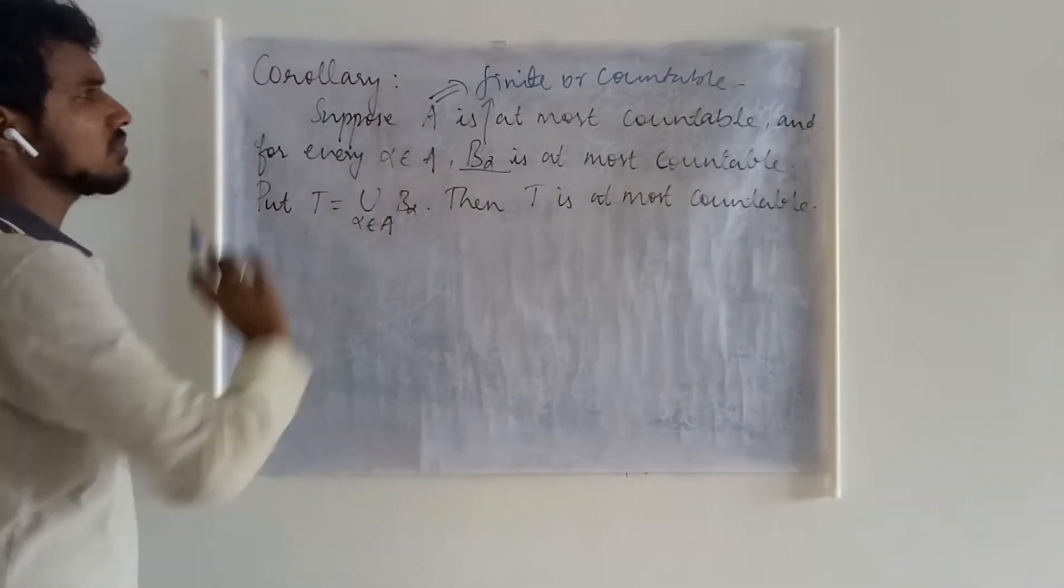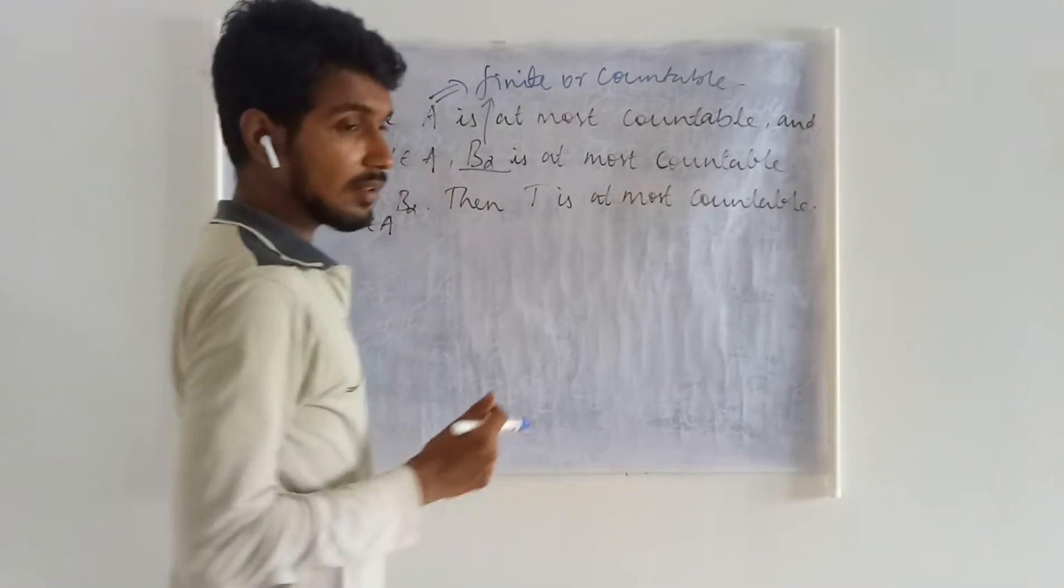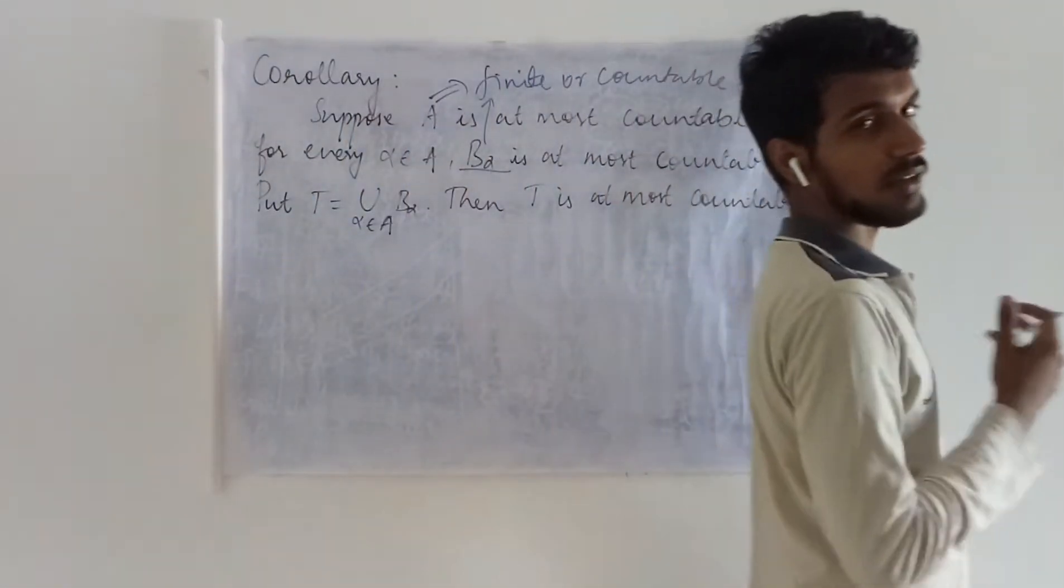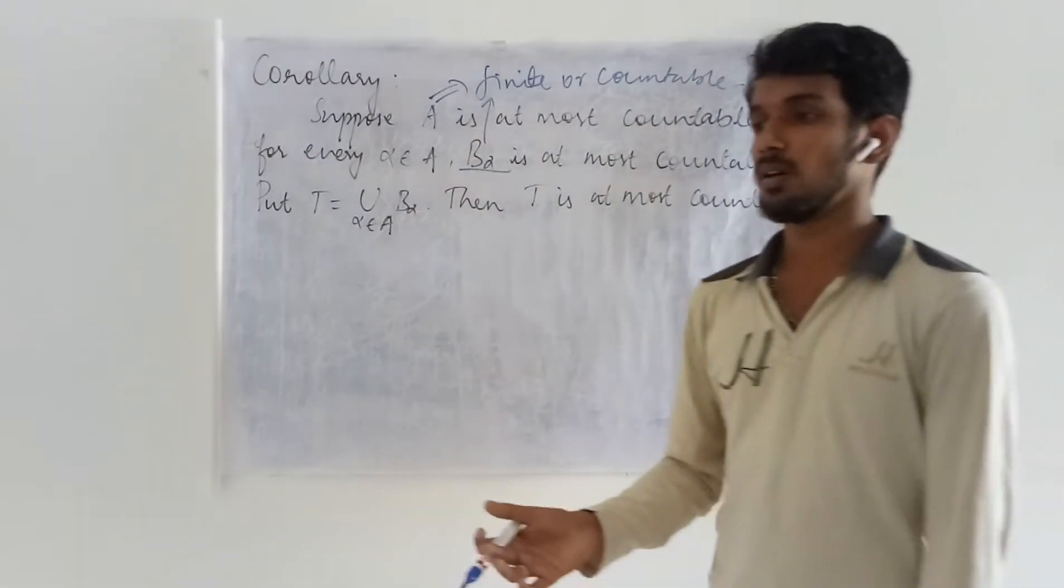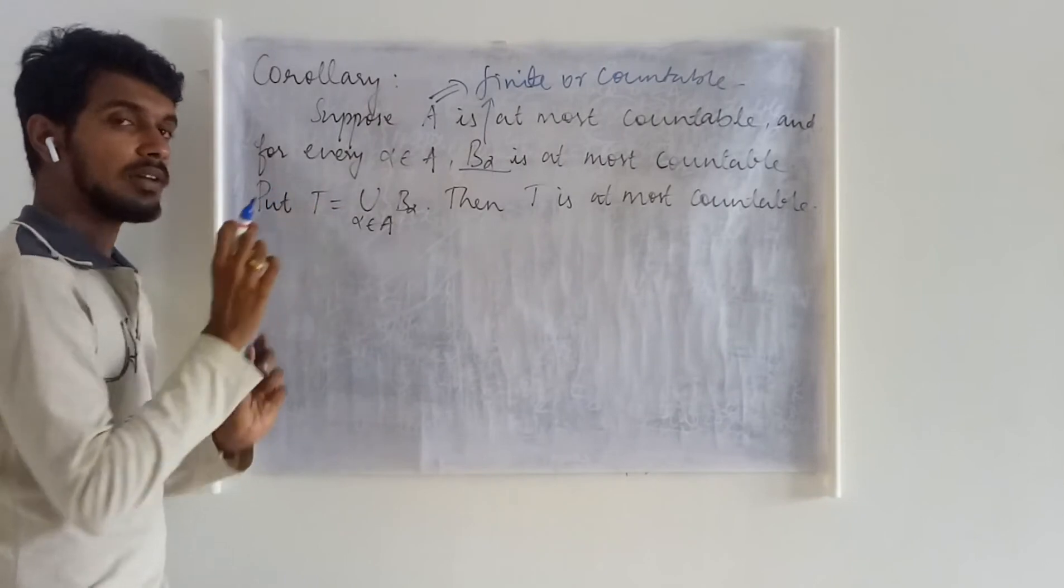Let this be an at most countable set. While defining this union and intersection, finite union and countable union, we have chosen our A to be a finite set.